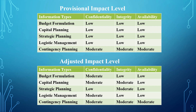As a result of that meeting: budget formulation confidentiality was adjusted to moderate, integrity remains low, and availability remains low. Capital planning confidentiality was adjusted to moderate, integrity was adjusted to moderate, and availability remains low. Strategic planning confidentiality remains low, integrity was adjusted to moderate, and availability remains low. For logistic management, confidentiality was adjusted to moderate, integrity remains low, and availability remains low.